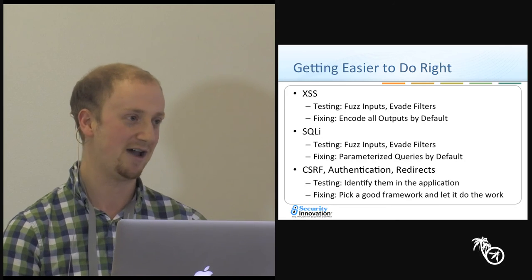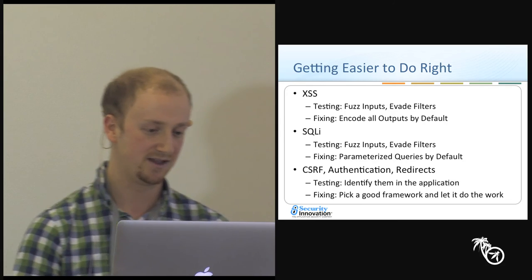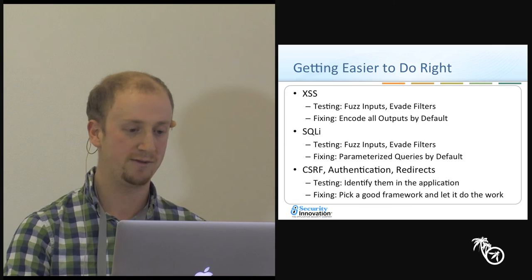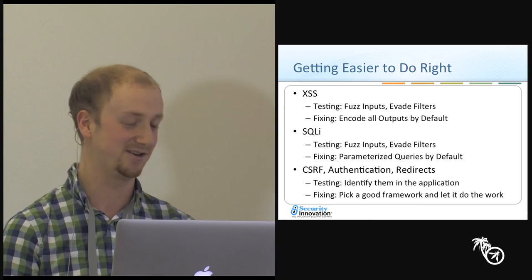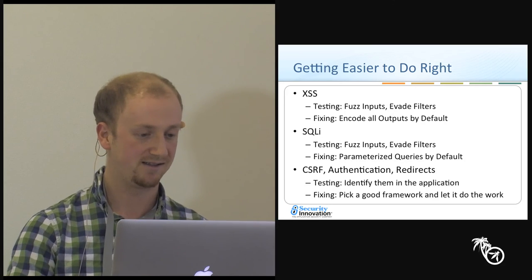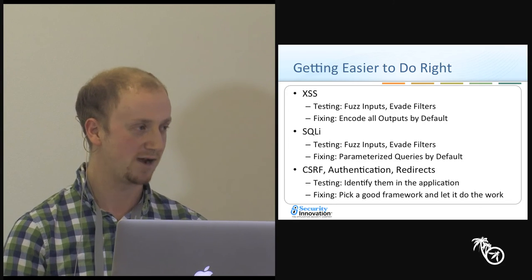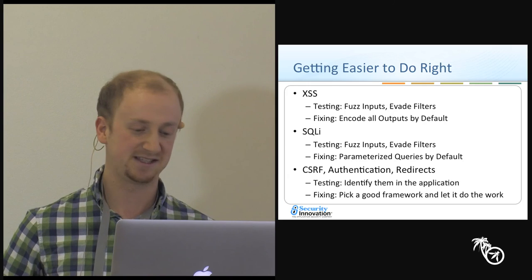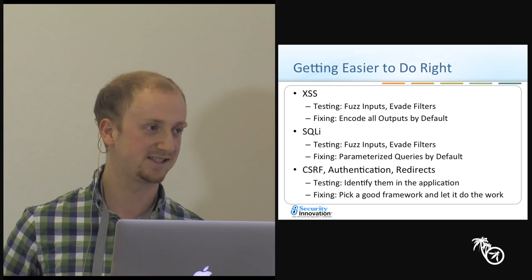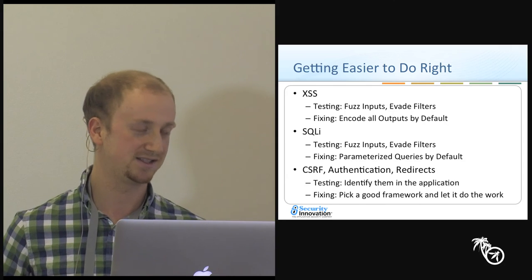If you look at attacks like XSS, the methodology for testing and fixing has gotten a lot better. XSS testing is pretty standardized — there are resources online to figure out inputs to send and how to evade filters. For fixing, it's become the known rule to output-encode everything, all data. People are starting to do this by default. Same thing with SQL injection — fuzzing all inputs, evading filters, and the known fix is to use parameterized queries by default. CSRF, authentication, and open redirects are similar — testers know what to look for, and fixing is now about picking the right framework that handles these bugs by default.